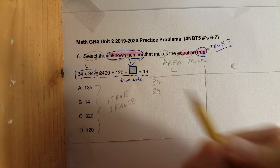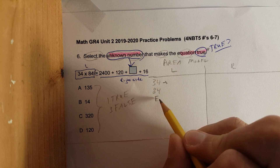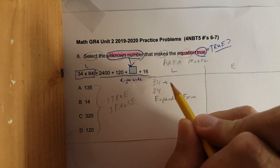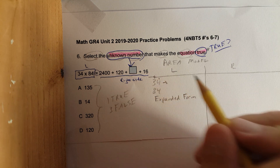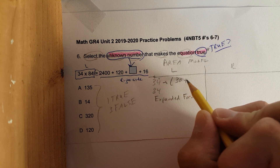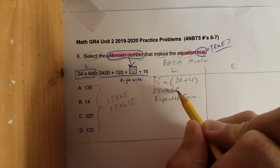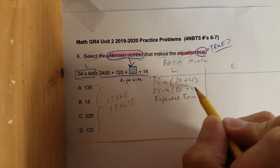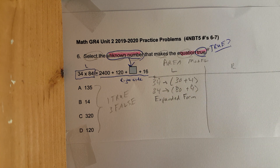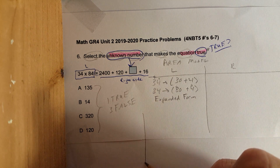Let's expand these numbers. In expanded form, we separate into tens and ones. 34 is the same as 30 plus 4. 84 is the same as 80 plus 4. So we've expanded both numbers into ones and tens.